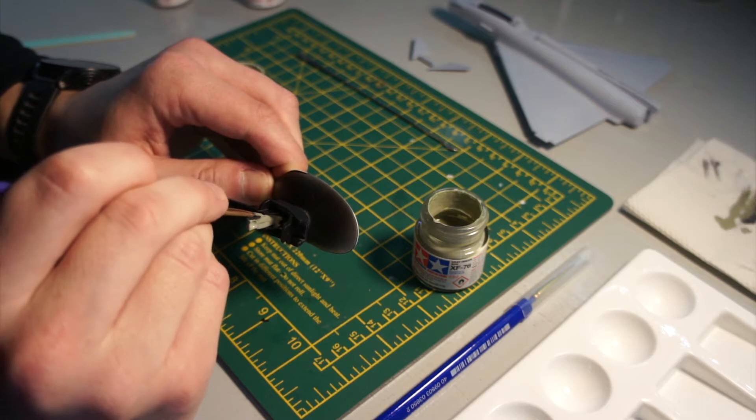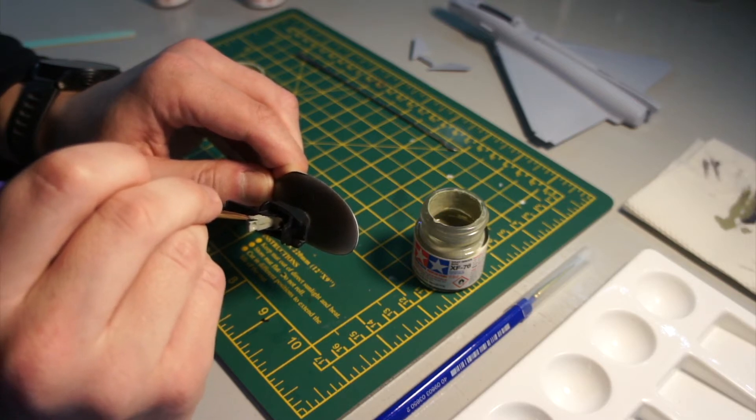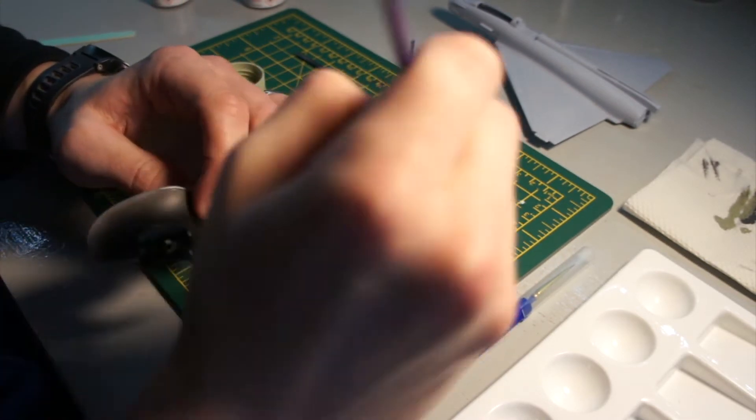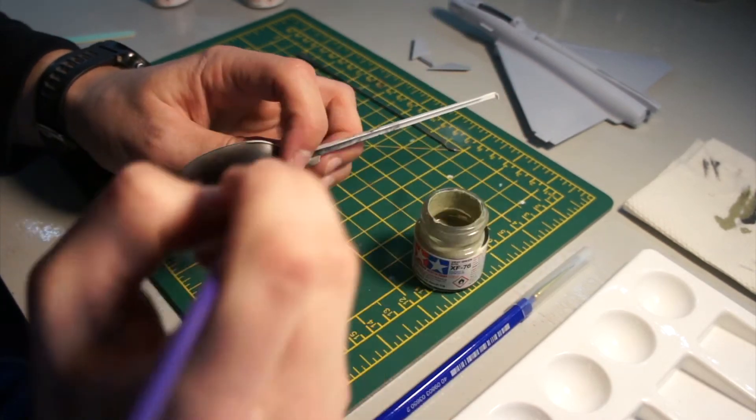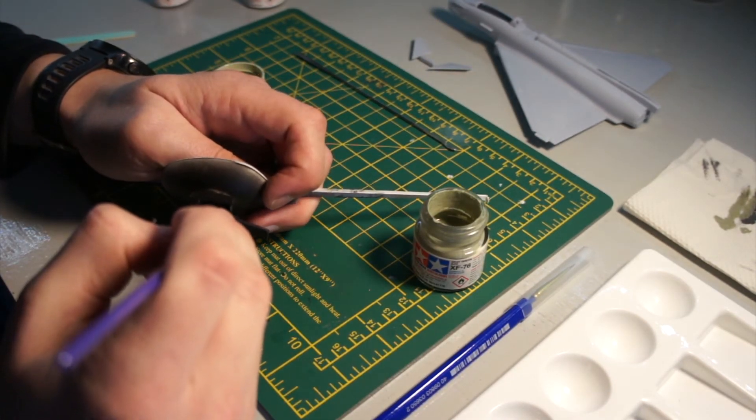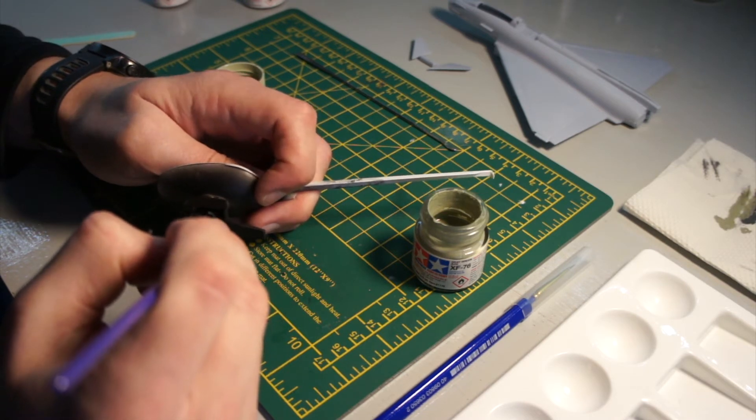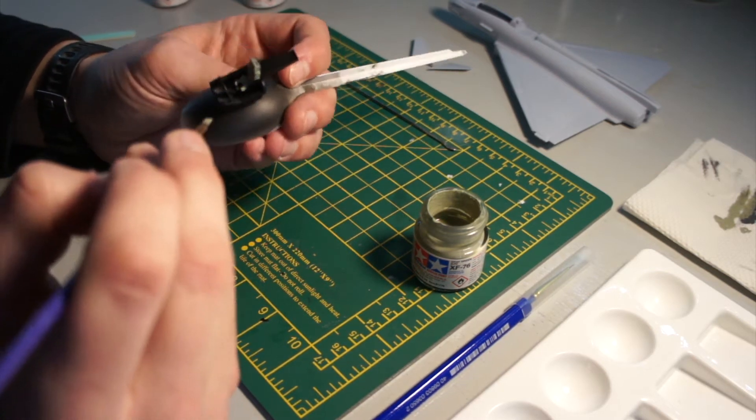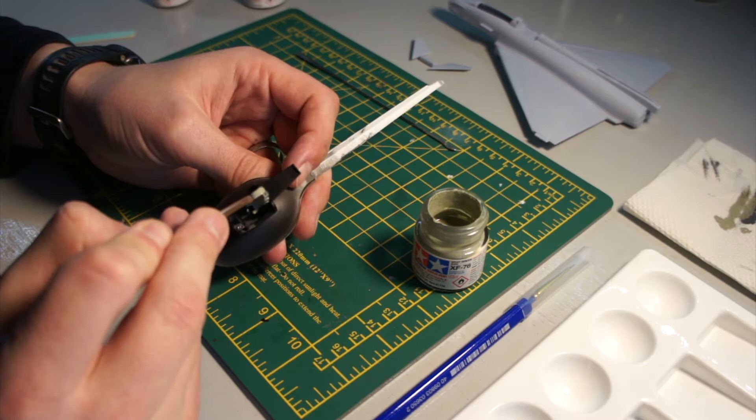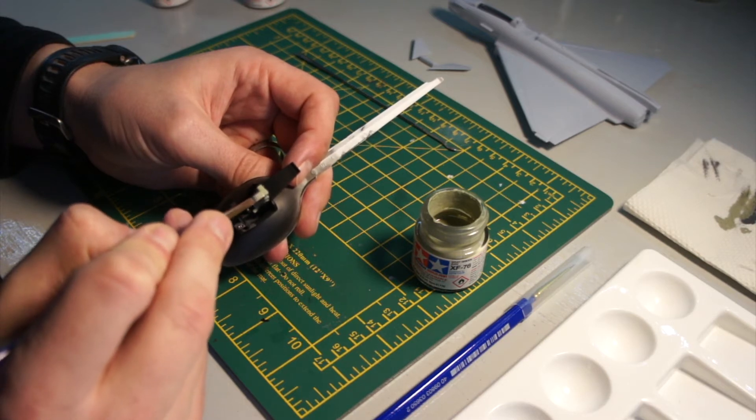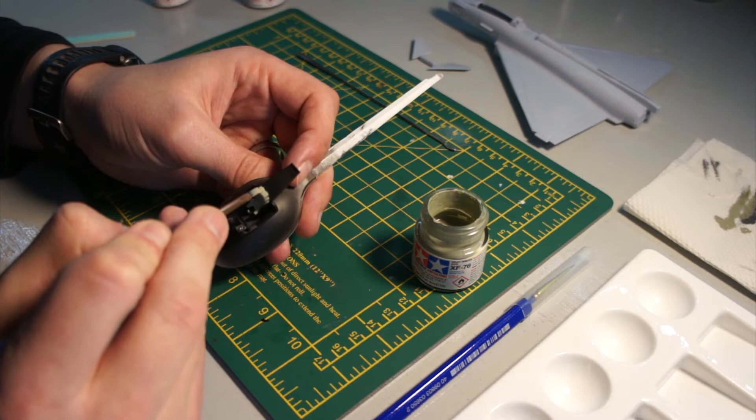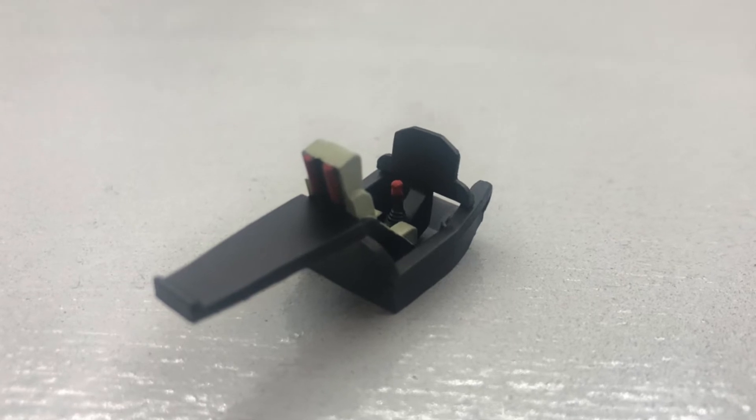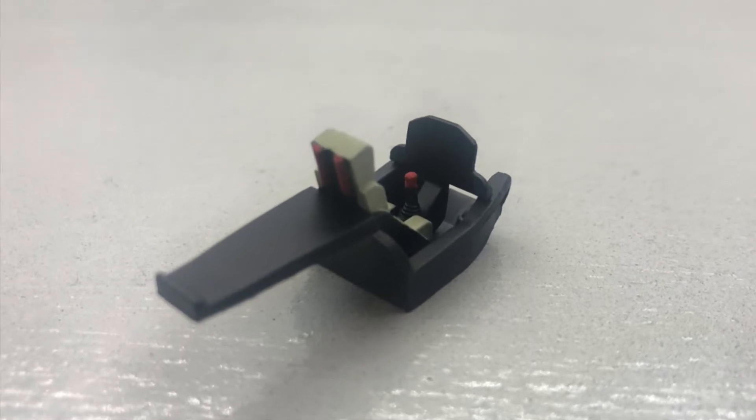I just went with some XF-76 just to paint the seat and keep it really simple. I added a little bit of grey to the footwell and put some red on the control stick and what looked like some canisters on the back. It's not entirely accurate but I just wanted to keep it simple and add some variety. Here's the finished cockpit. As you can see, very simple, very basic, but it's nice and neat and went together quite nicely.